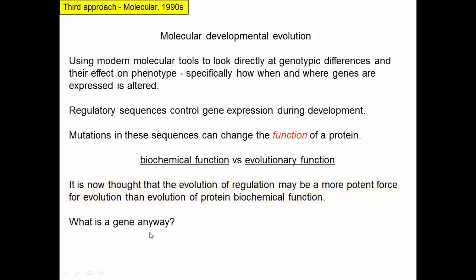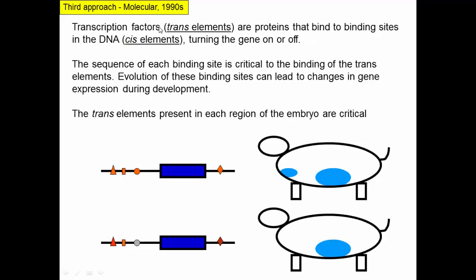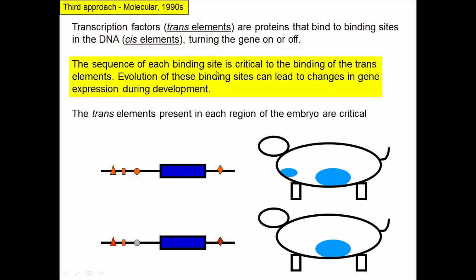What exactly is a gene for our purposes? We have transcription factors, which are trans elements — they float around and bind to things in the DNA sequence near the gene, called cis elements. Cis means on the same chromosome; trans factors come in from somewhere else. Transcription factors bind to these binding sites and by binding they turn genes on or off. For example, binding at all four sites turns on expression in two locations in a developing organism. The sequence of each binding site is critical, and evolution of the binding sites can lead to changes in gene expression.